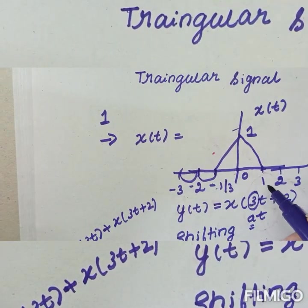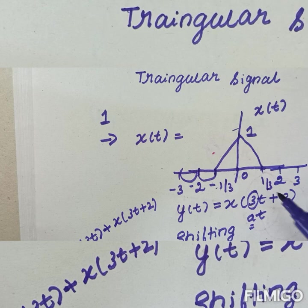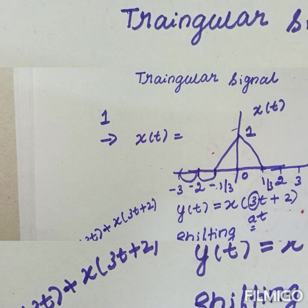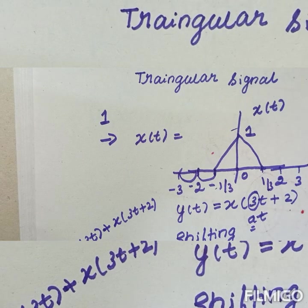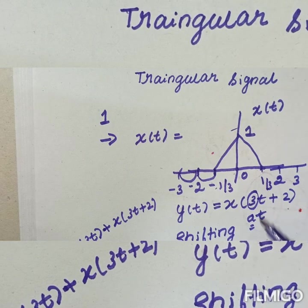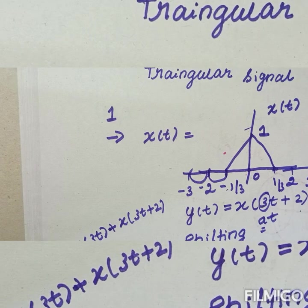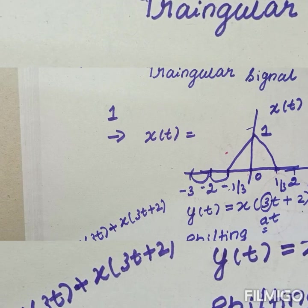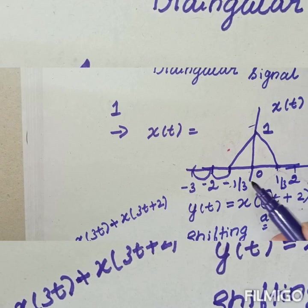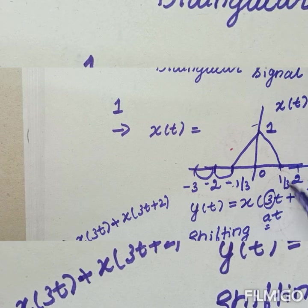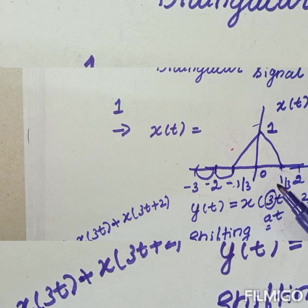To find x of 3t from the given signal, you divide the time axis by 3, because x of 3t is x of at with a equal to 3, which is the scaling factor.